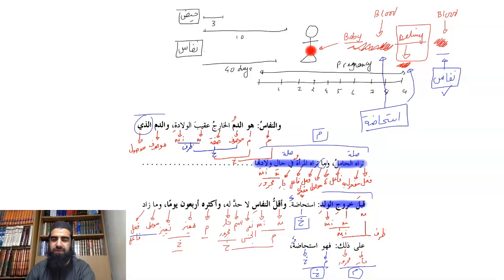As for minimum nifas, there is no such thing as a minimum nifas. Technically a woman might not see any blood after the child is born. That's possible. But for haith the minimum amount of bleeding that has to occur for a woman to be declared as being in the state of haith has to be three days. So that's the important thing to note here.